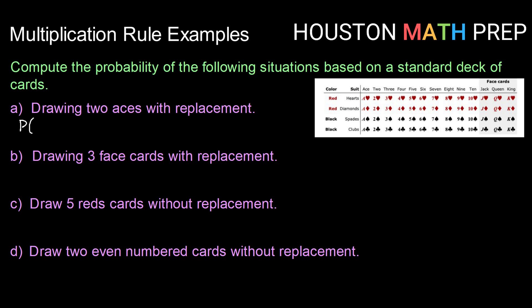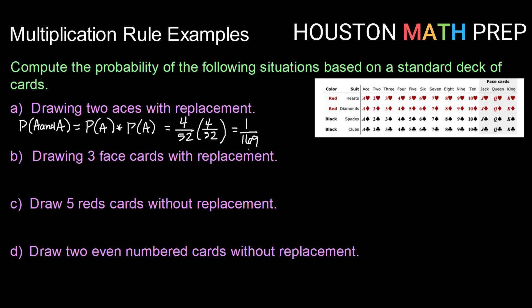So the probability of getting an ace and an ace with replacement will just be the probability of getting an ace times the probability of getting an ace. Now there are 4 aces out of 52 cards. So if we do 4 out of 52 times 4 out of 52, we get a reduced probability of 1 out of 169.